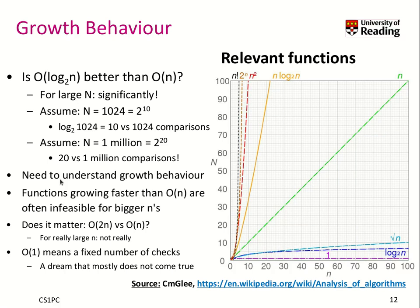To understand the performance of different algorithms, we have to study the general growth behavior of different types of functions. So far we have seen that our array search took O(n) to find a key, while our binary search takes log₂(n).